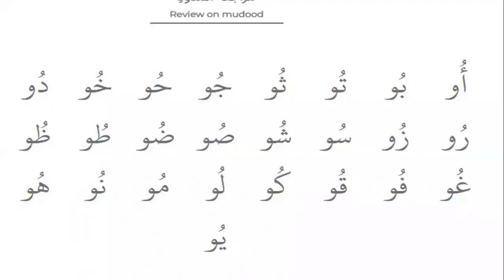Mad with waw. Try to remember mad with waw. Mad with waw means a letter followed by waw mad, which means double dommah. Alif, waw mad — u. Ba, waw mad — bu.